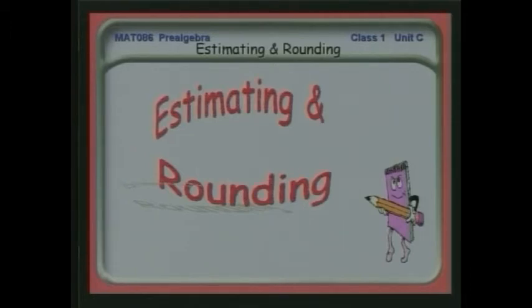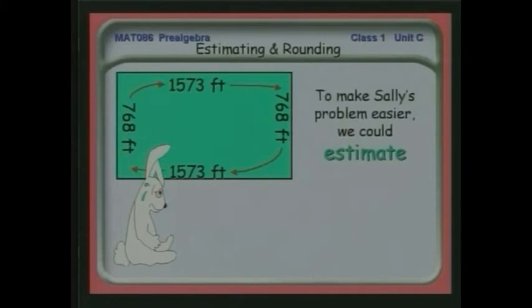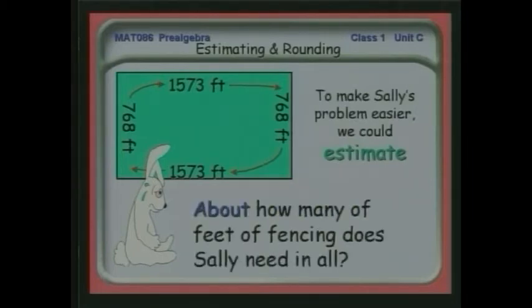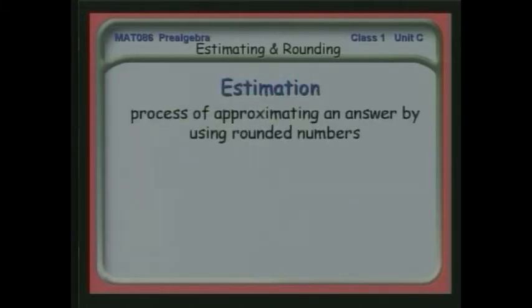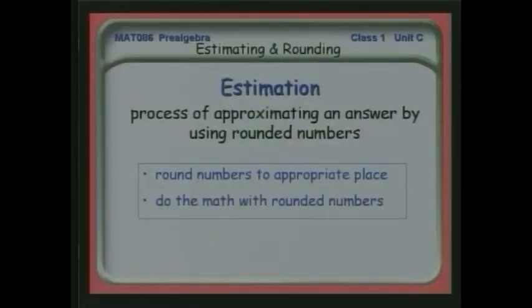Now let's talk about rounding and estimating. That last problem was annoying because that math, I couldn't do it in my head. If I walked into a store and tried to figure out how to do it on the fly, it would be difficult. So what I'd like to do is find a way to make doing some of this math in my head simpler. We could estimate, and so we could say about how many feet of fencing does she need in all. The process of estimation is the process of approximating an answer and then using rounded numbers to do the math. We round the numbers to some appropriate place, and then after we've rounded the numbers, we go back and do the math.